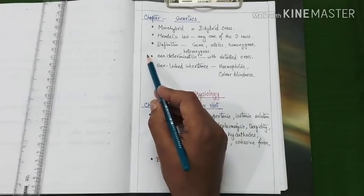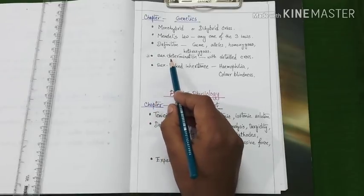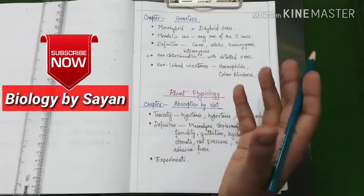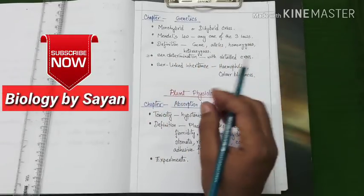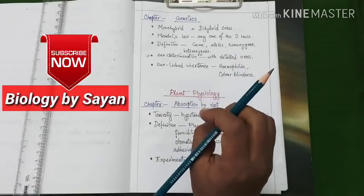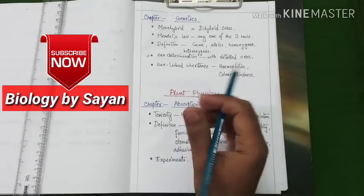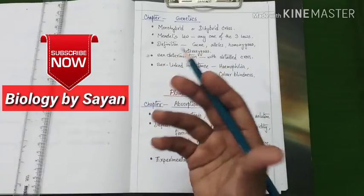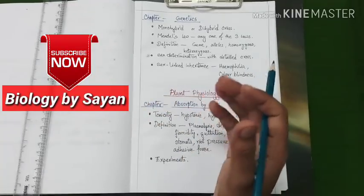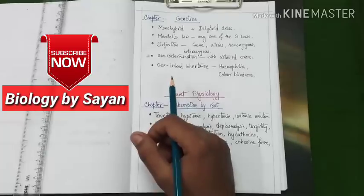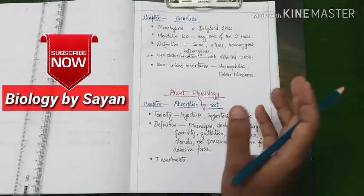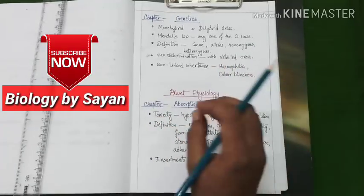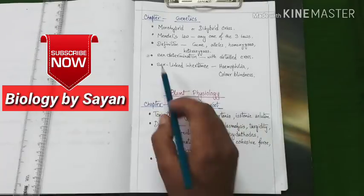Now our next important topic is sex determination. The process of sex determination in humans. And for that purpose you need to prepare this question with detailed cross. How any baby boy or baby girl may appear in the next generation? Who is actually responsible for the sex in humans, whether it is father or mother. You may be asked any type of question from this section.